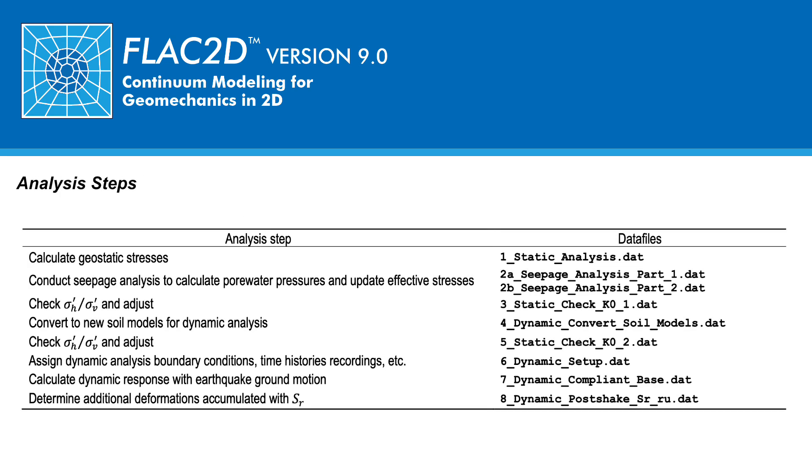The analysis sequence is composed of 8 analysis steps and separated into 9 data files. In the first analysis step, geostatic stresses are calculated without the impacts of the reservoir. A simple modeling approach is used where mechanical equilibrium is determined for the whole model with elastic response.